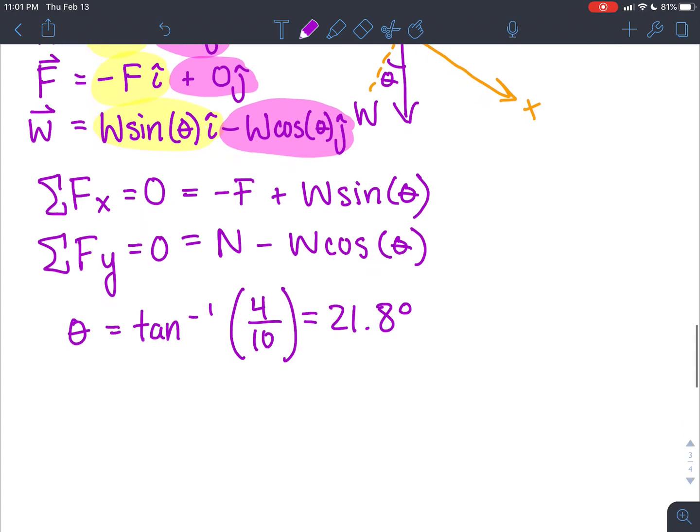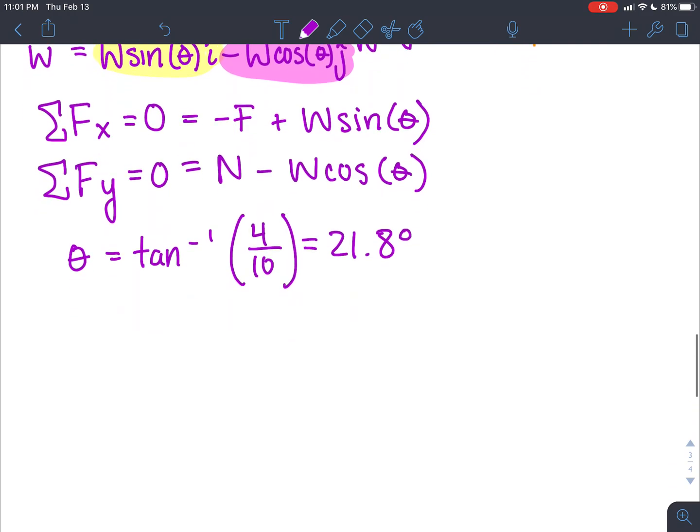So that's helpful. And then we can move on from there. So if we start with this summation of forces in the x. If we have zero equals negative F, we can move this over here, and that will give us F equals W sine theta.